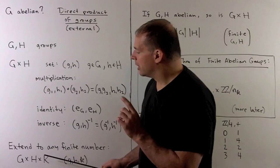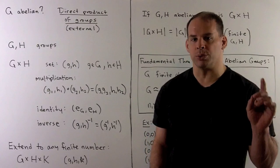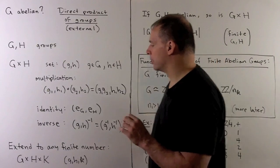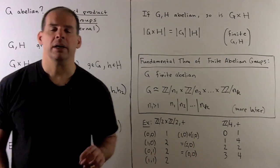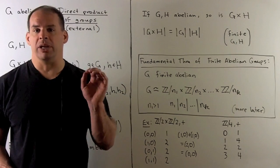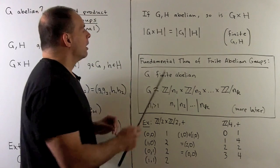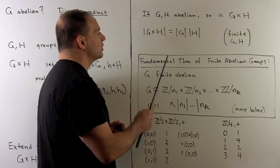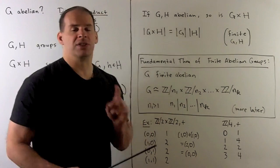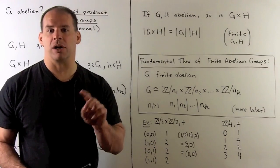There's no reason to stay with just two groups - we can take the direct product of any finite number of groups that we want, and we're going to have a slot for each group. If our G and H are abelian, then the direct product will be abelian also. For the cardinality, if our G and H are finite, the number of elements in G cross H is just the number of elements in G times the number of elements in H. That's just set theory - if we have two finite sets, the order of the product is the product of the orders.